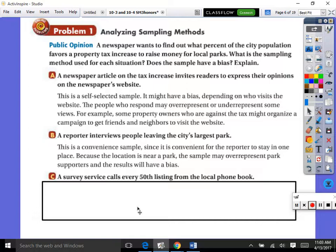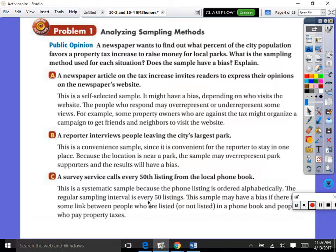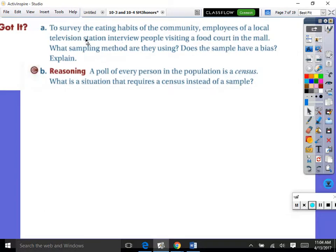So a survey service calls every 50th listing. That's obviously systematic, right? You said systematic? That one's not random. That has a system to it. This is systematic. It says the phone book was listed alphabetically. The regular sampling intervals is every 50 listings. The sample may have a bias if there is some link between people who are listed or not listed in the phone book and people who pay property taxes. That's what makes it hard, it's like there's not one right answer. Because at the same time, like every 50th person, that's pretty good in my opinion. You know what I mean? But that's my opinion. I don't really know if there'd be a bias there.